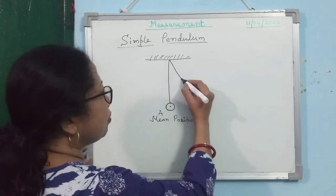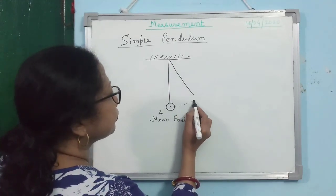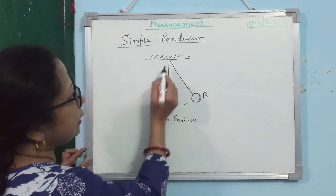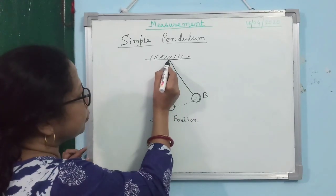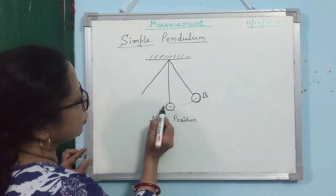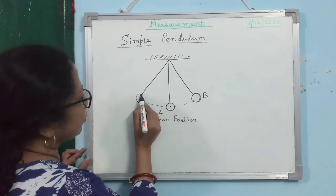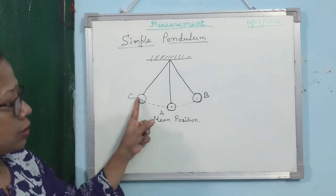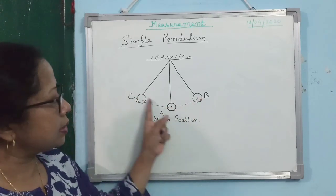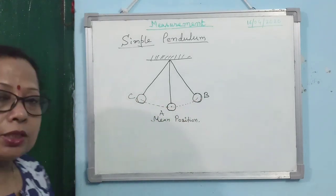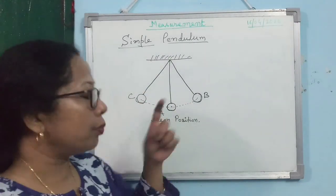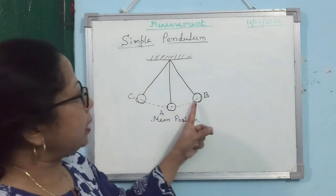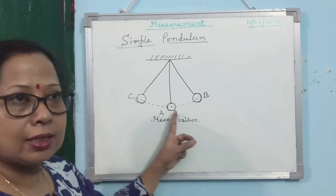If I draw the diagram, the pendulum comes from B to A and then goes to C. From B it comes to A, then goes to C, then comes back from A to B. This to-and-fro motion is known as oscillation, and this kind of motion of the pendulum is also known as simple harmonic motion.